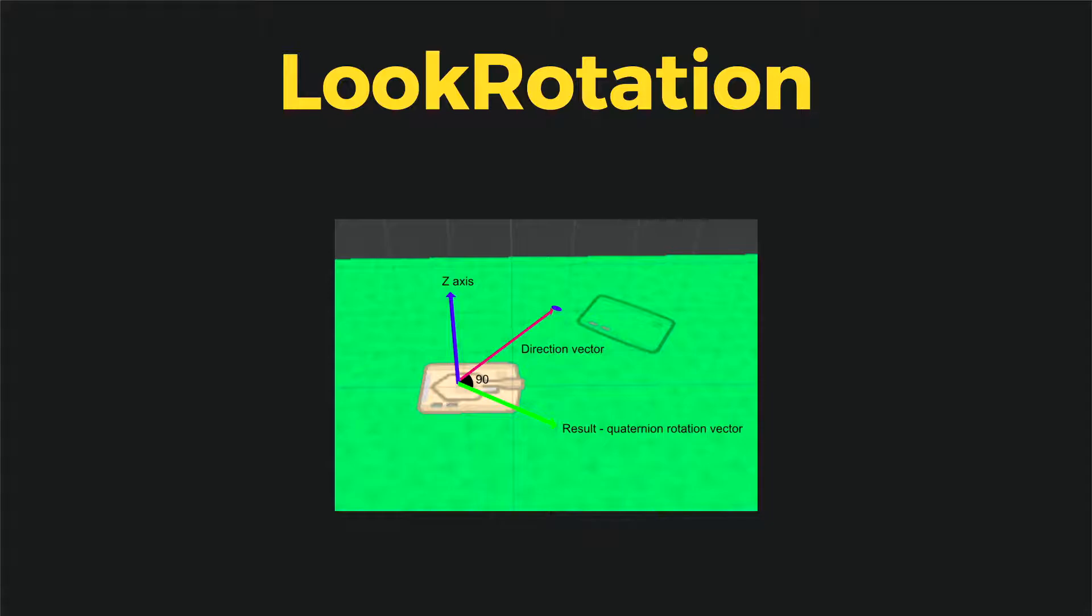It ends where the blue dot is drawn, so this is the point where we have clicked or we are pointing with our mouse. If we pass to LookRotation z-axis as the first parameter and red vector as the second parameter, we will turn the x-axis in the direction of the cross product.